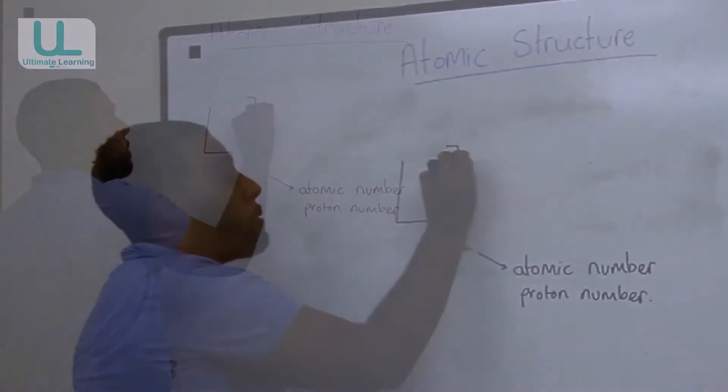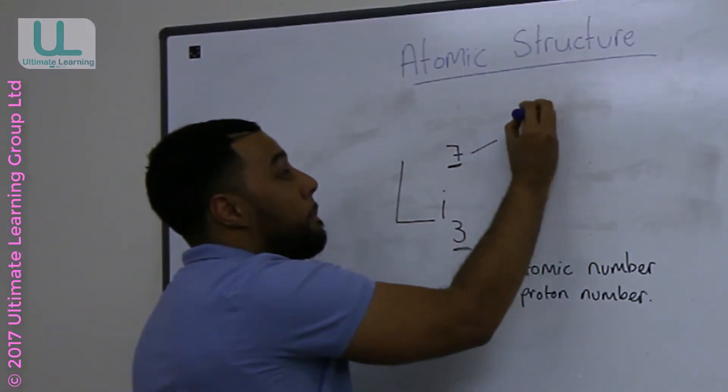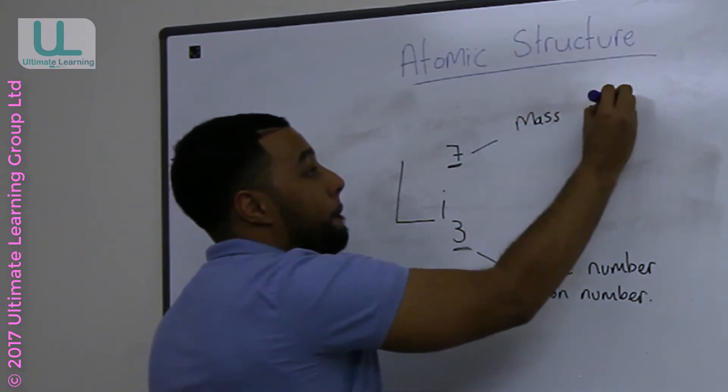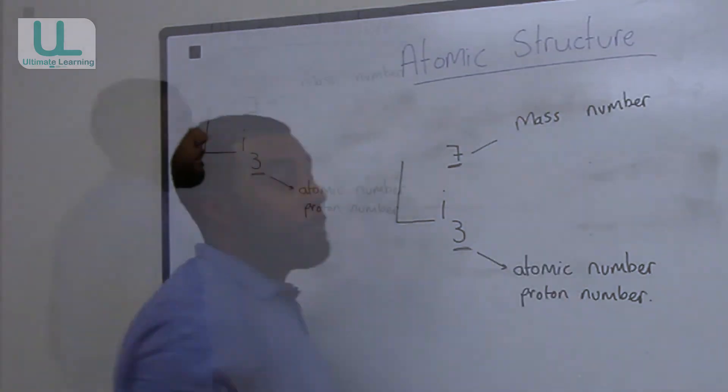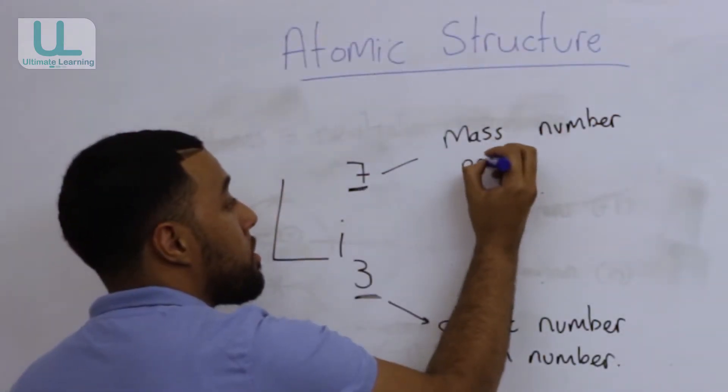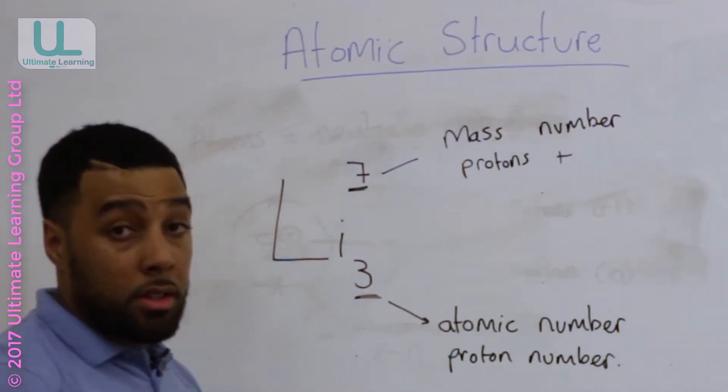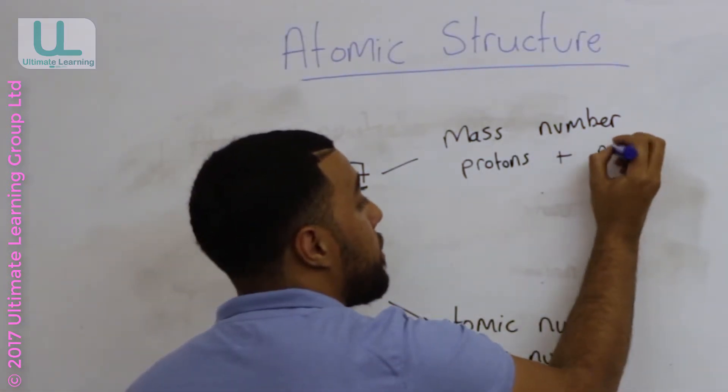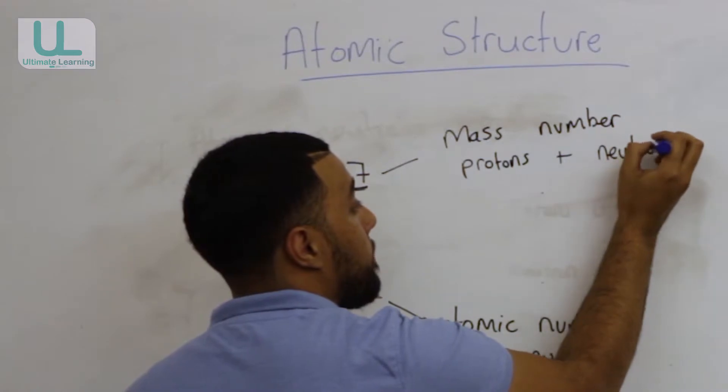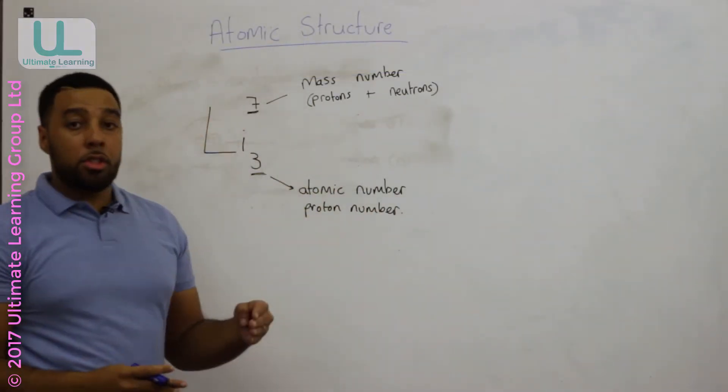This top one, the number at the top, this is called the mass number. The mass number is the number of protons added to the number of neutrons.